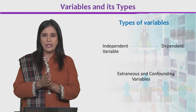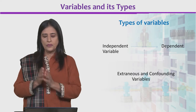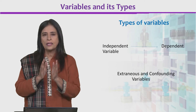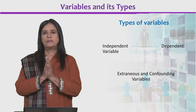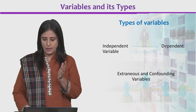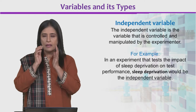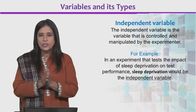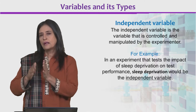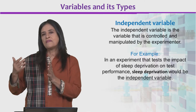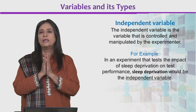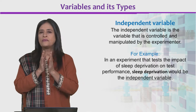Types of variables: independent variable, dependent variable, and extraneous and confounding variables. The independent variable is the variable which is studied as yielding an effect on the dependent variable — that is actually the one that we control.